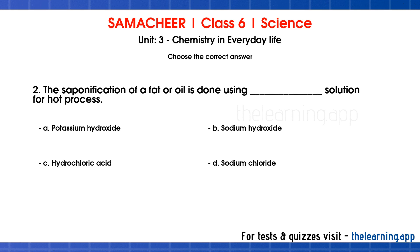Question 2. The saponification of a fat or oil is done using dash solution for hot process. Options are: A. Potassium hydroxide, B. Sodium hydroxide, C. Hydrochloric acid, D. Sodium chloride. Correct answer is B. Sodium hydroxide.